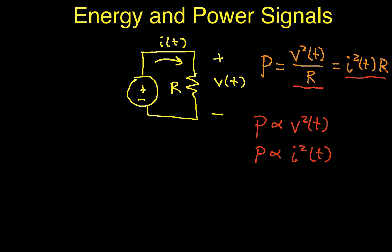In signal processing, or more generally in signals and systems, for any arbitrary signal X of T, power is proportional to the magnitude of the signal squared. We use the concept that power is proportional to the square of voltage, or the square of current, to say that in general the power associated with a signal is the square of its magnitude.